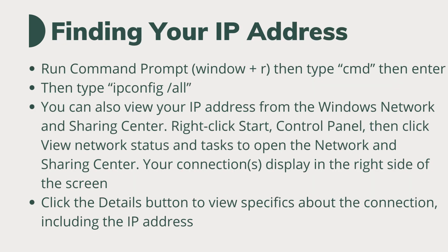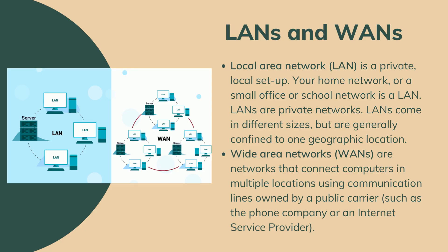How to find your IP address: open the Run command window and press R, then type 'cmd' — shortcut for command — then press Enter, then type 'ipconfig /all'. You can also view your IP addresses from the Windows Network and Sharing Center. Click the Details button to view specifics about the connection, including the IP address.